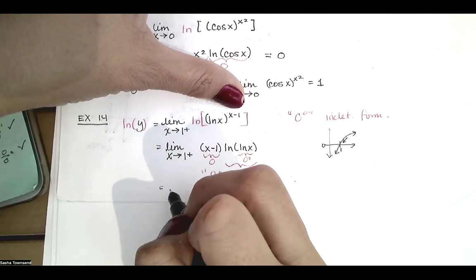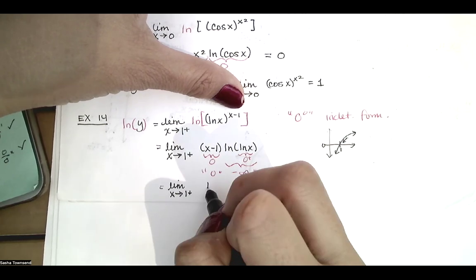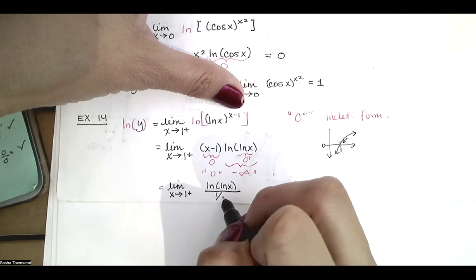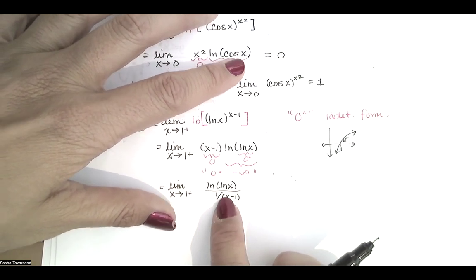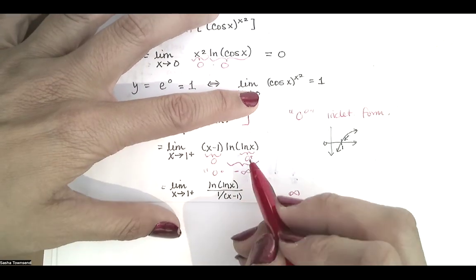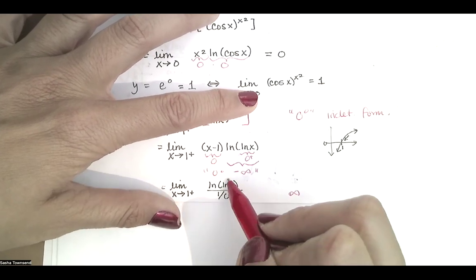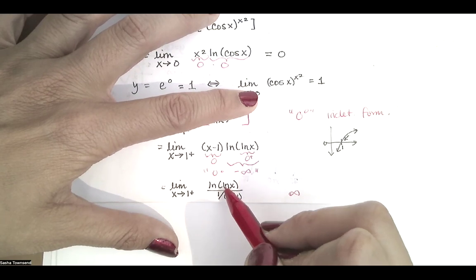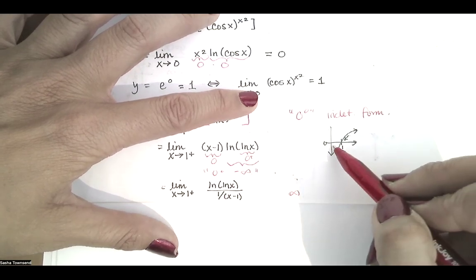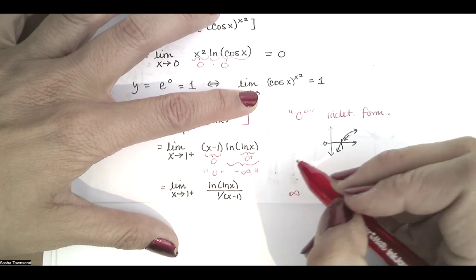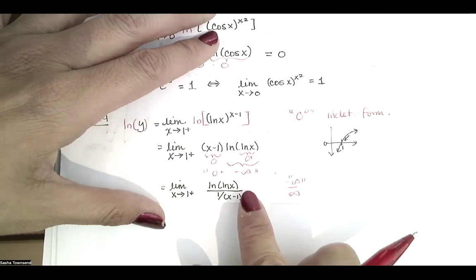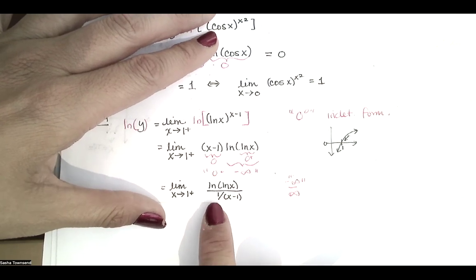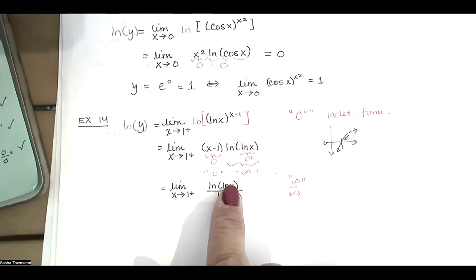I would prefer to put the x minus 1 factor in the denominator. So we take the limit as x approaches 1 from the right of natural log of the natural log of x, divided by 1 over x minus 1. As x approaches 1 from the right, 1 divided by a tiny positive number is a large positive number, so the denominator approaches infinity. And the natural log of the natural log of x approaches negative infinity, giving us a negative infinity over infinity indeterminate form, which means we can use L'Hôpital's rule.